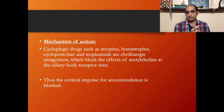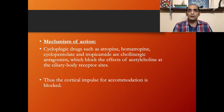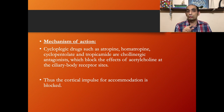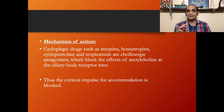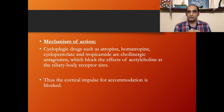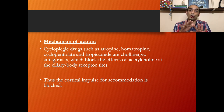Cycloplegic drugs such as atropine, homatropine, cyclopentolate, and tropicamide are cholinergic antagonists — drugs that bind to but do not activate cholinergic receptors, thereby blocking the actions of acetylcholine or cholinergic agonists. This blocks the effects of acetylcholine at the ciliary body receptor sites, so the cortical impulse for accommodation is blocked. The emmetropic patient's vision will be blurred at near, whereas patients with hyperopic ametropia will have blurred vision at all distances.